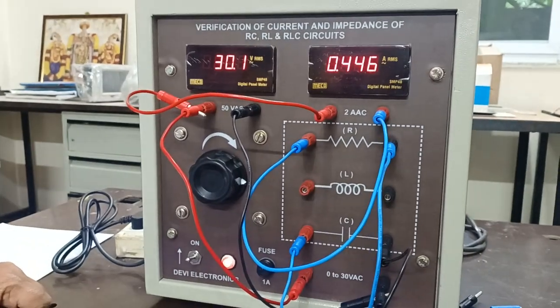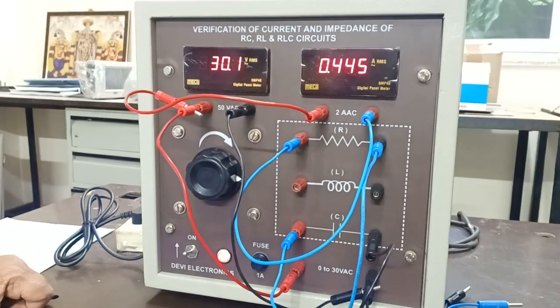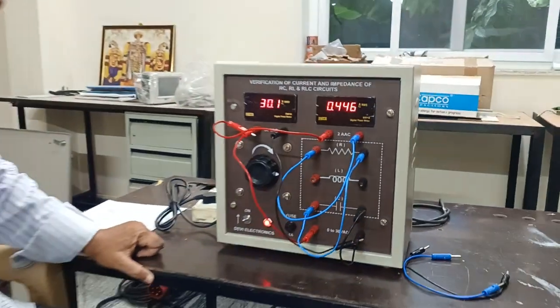At 30 volts in RC combination, it took 0.446, 446 milliampere. The calculation will be done later.